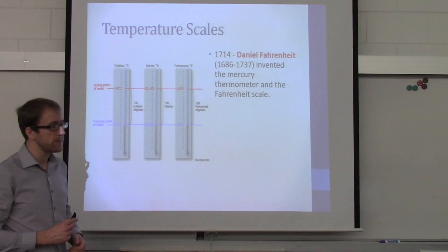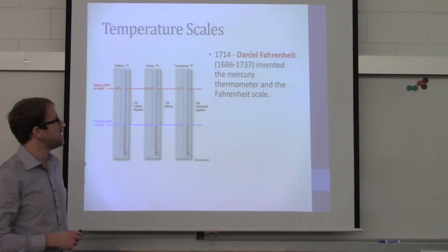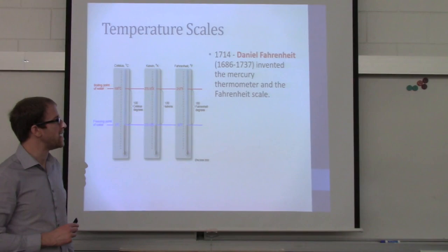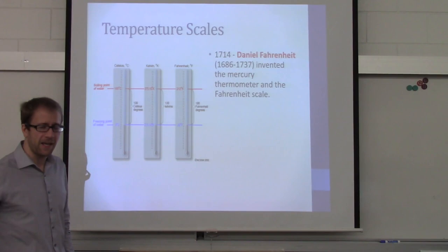In 1714, Daniel Fahrenheit invented the mercury thermometer and the Fahrenheit scale. The bonus — if you get to invent something in science — is that most of these scientists named it after themselves. I'm sure you can imagine that whoever invented Celsius and Kelvin also named it after themselves.